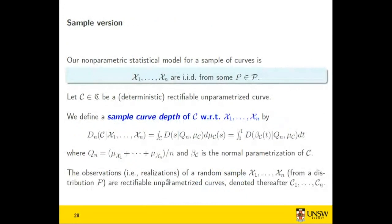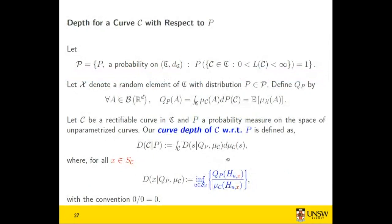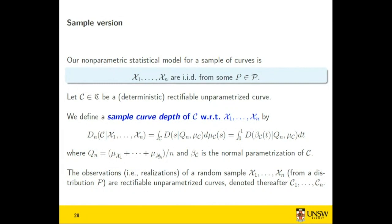The statistical model assumes an IID sample of random elements K_1 through K_n generating curves, and a potentially deterministic curve C. We compute the depth of C with respect to these random elements by applying the formula, replacing the measure Q_P by the empirical measure Q_n, with beta_c as the normal parametrization at constant speed.